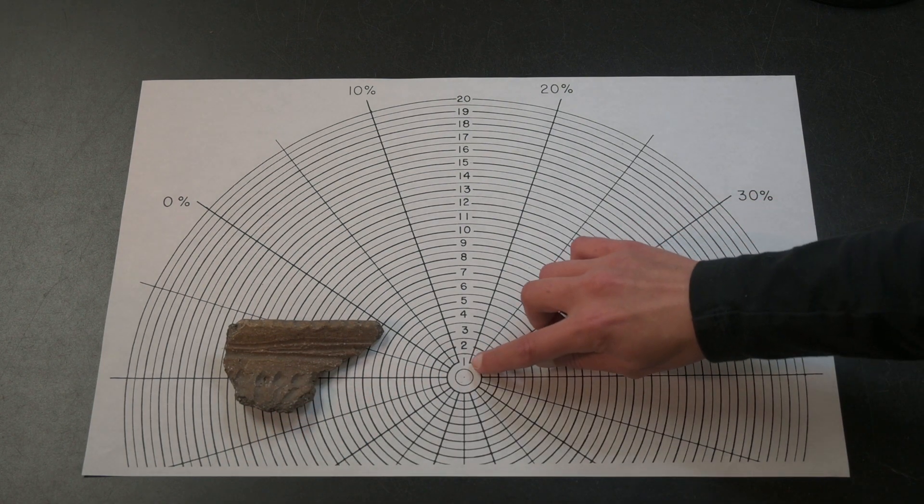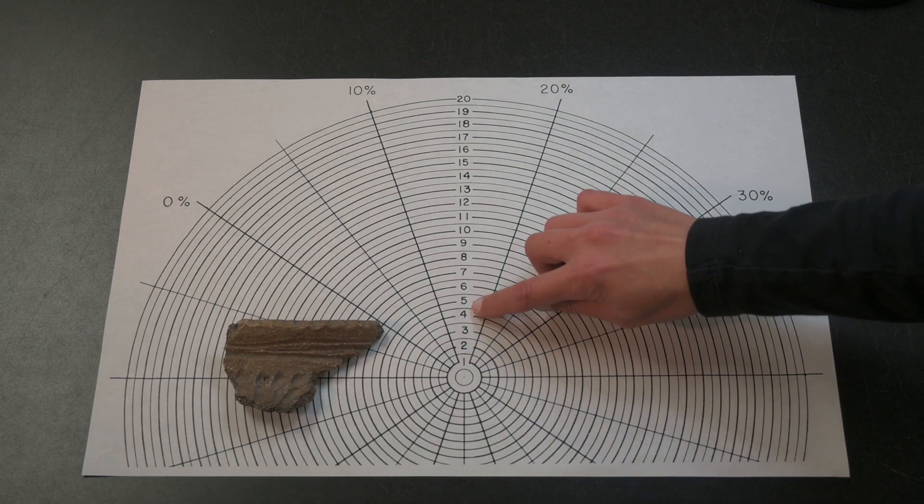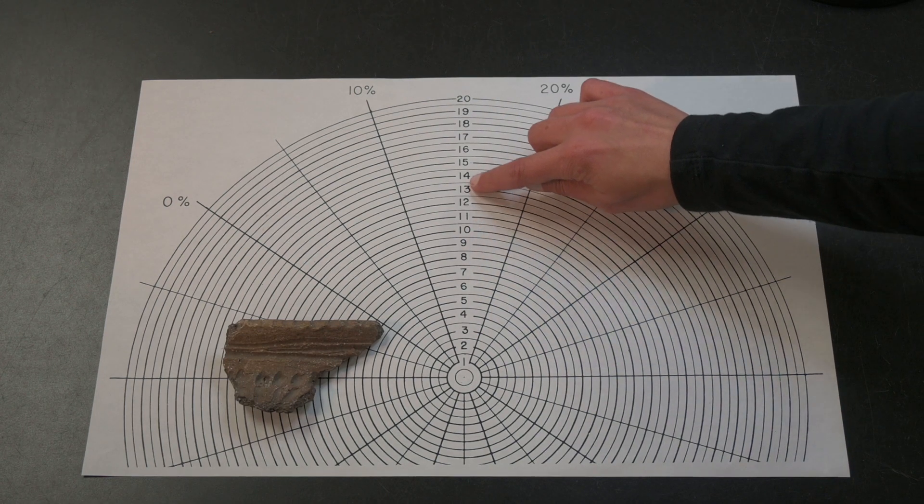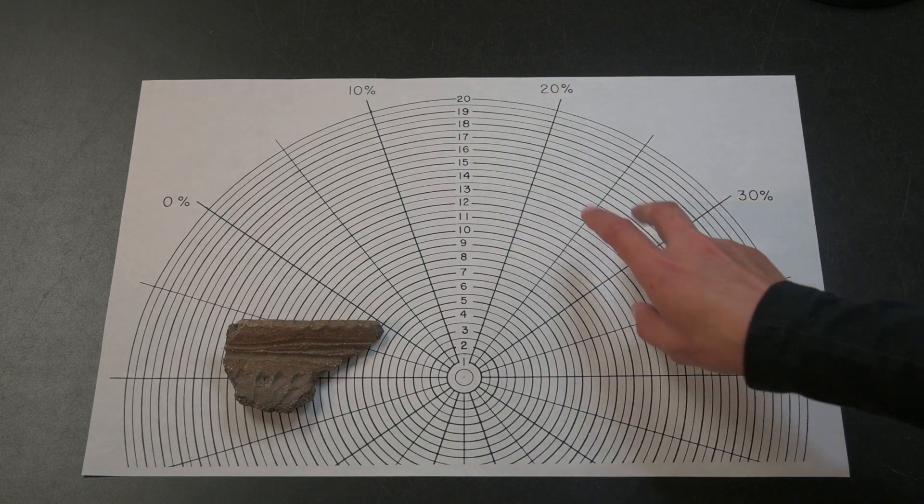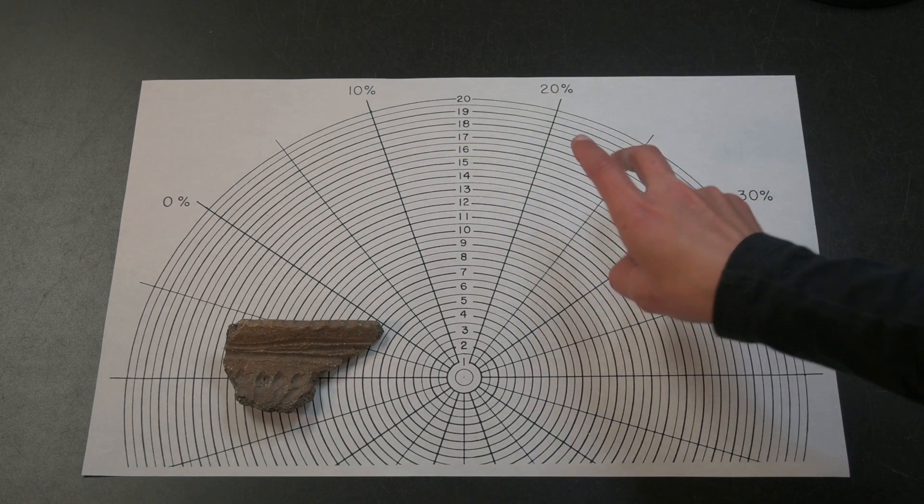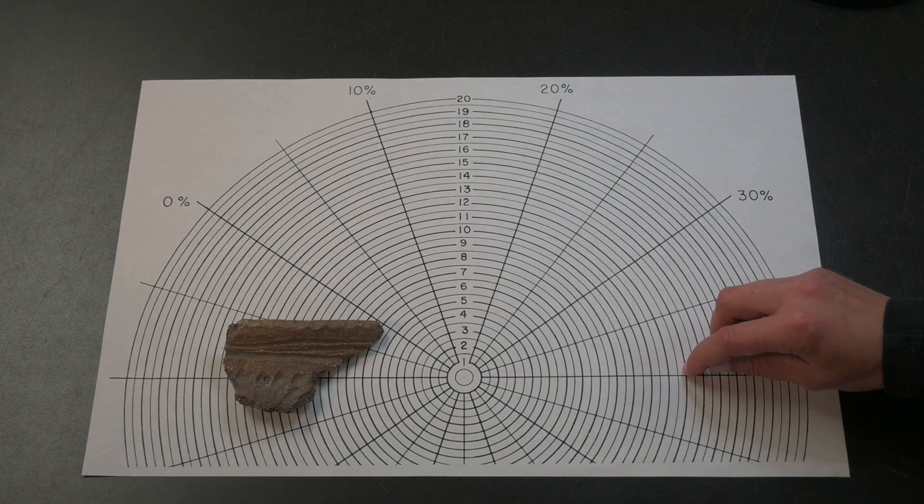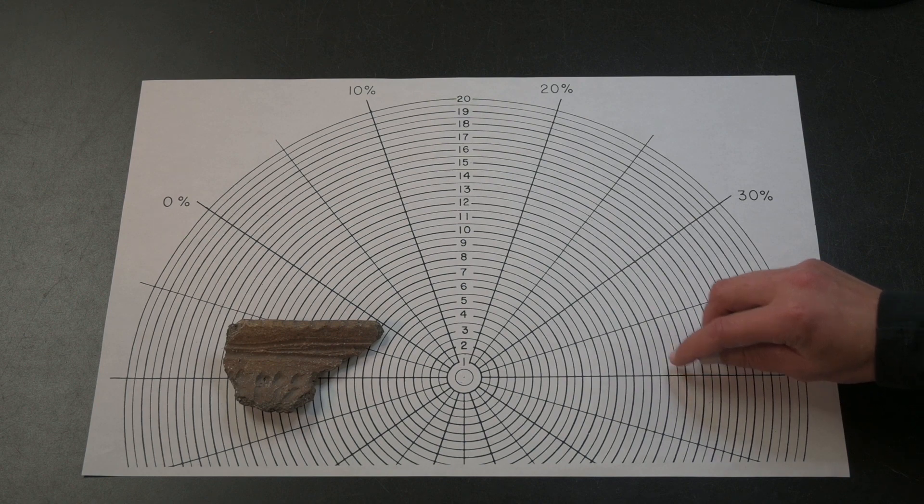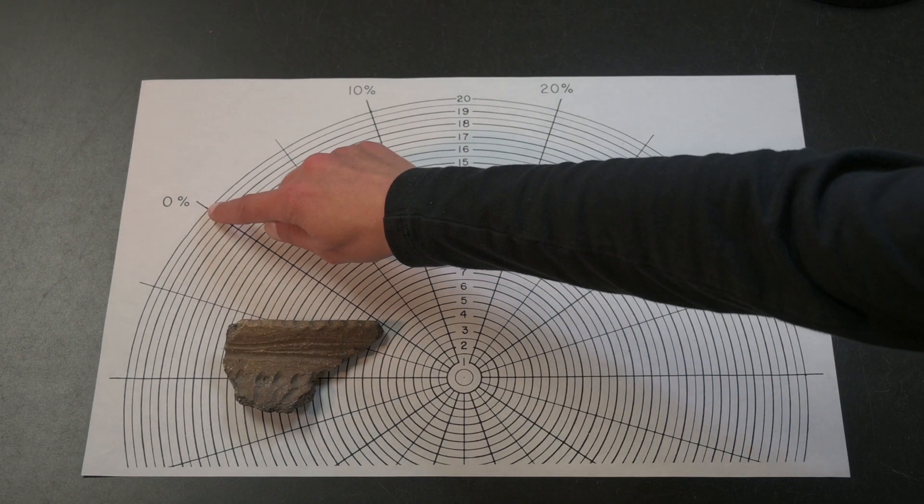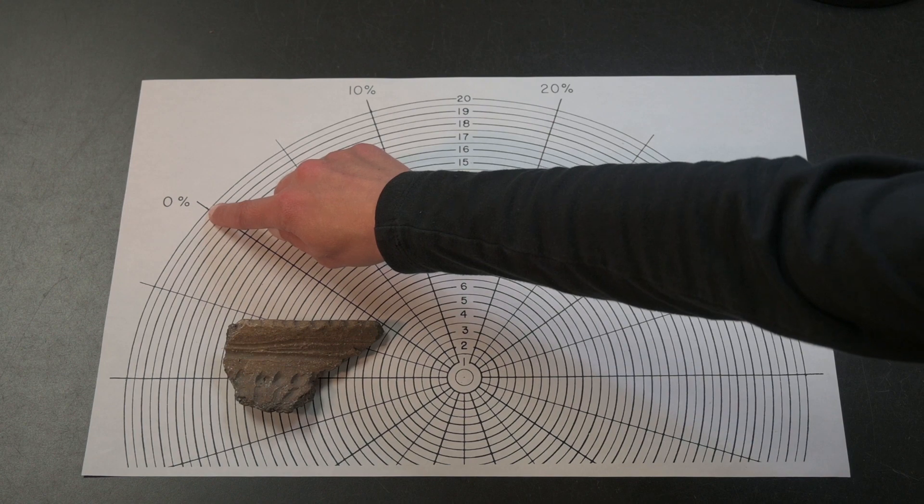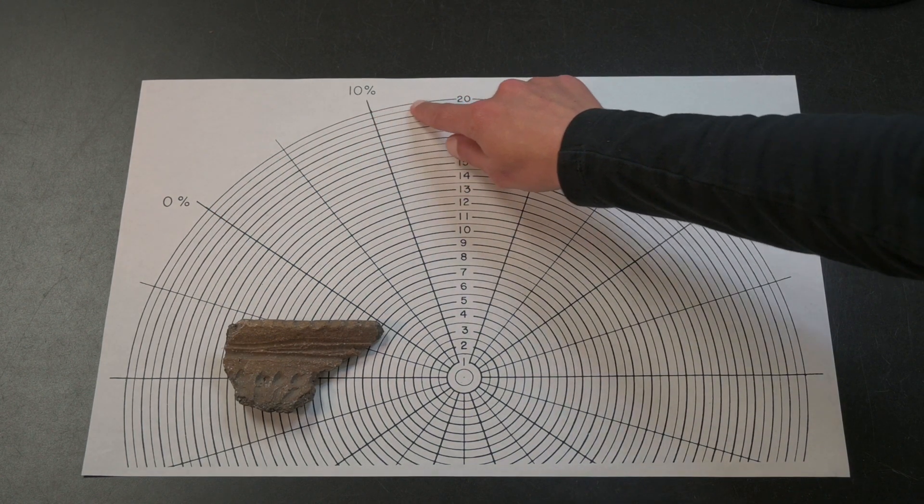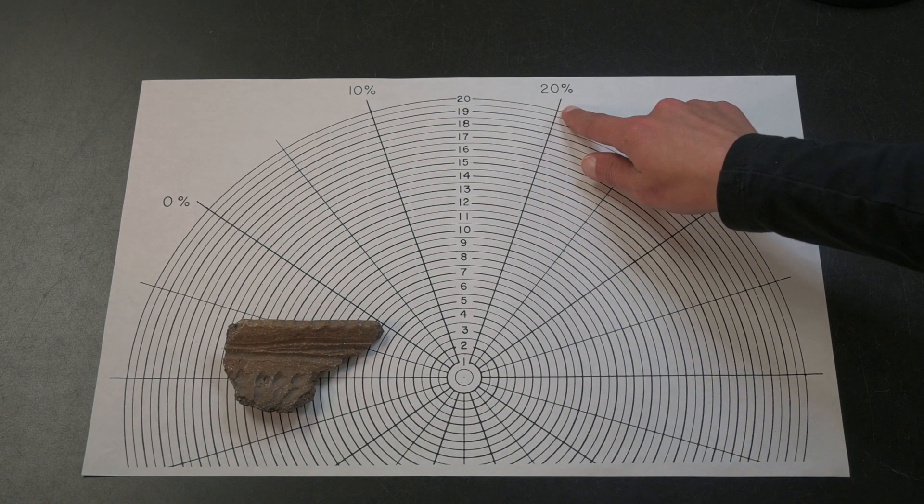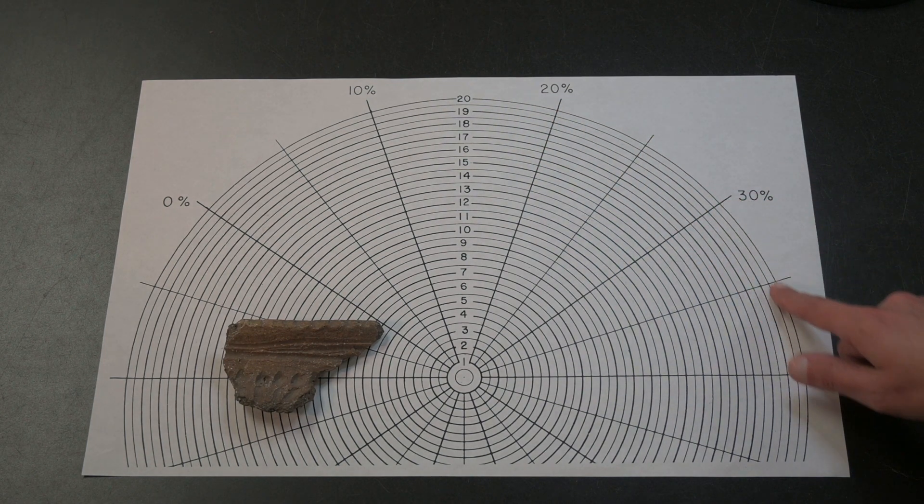This sheet shows the radius in centimeters going up the concentric circles. Simply multiply the radius by two to get the diameter. The sheet also shows the percent of the rim present, starting at zero and going up past ten, twenty percent, and so on along the outer edge.